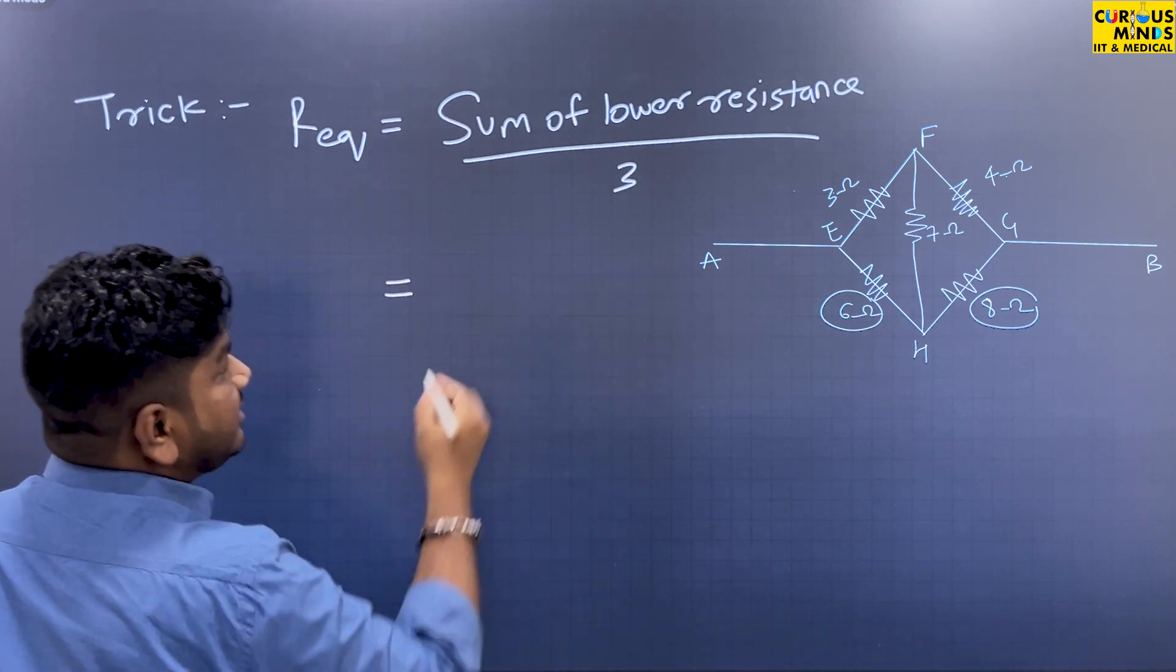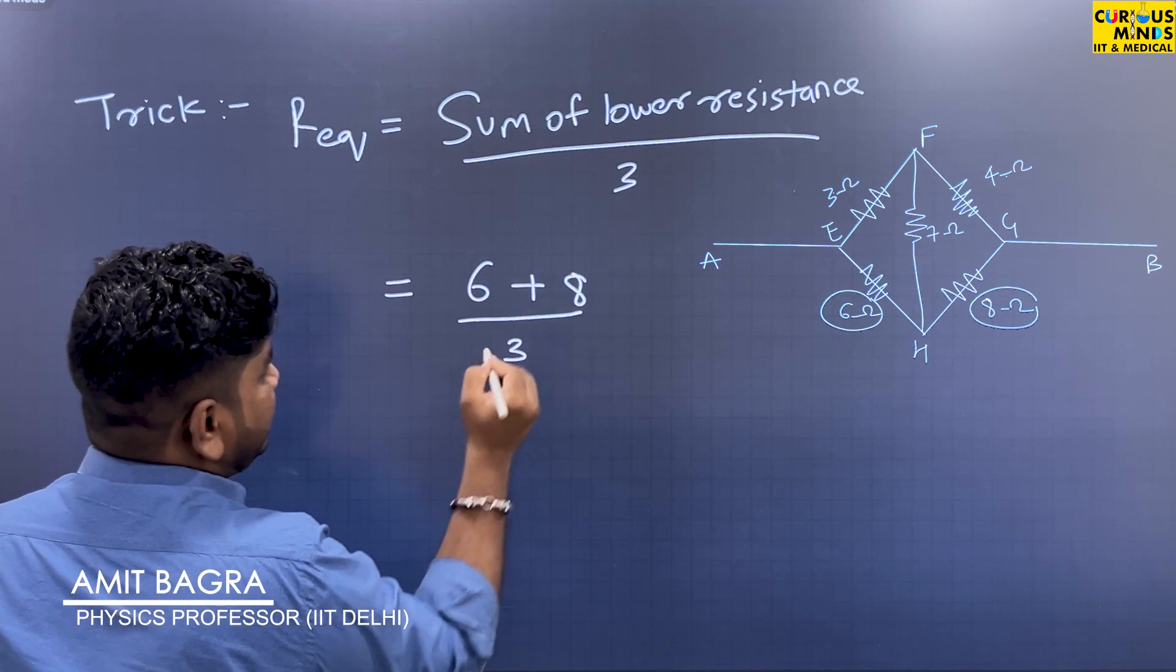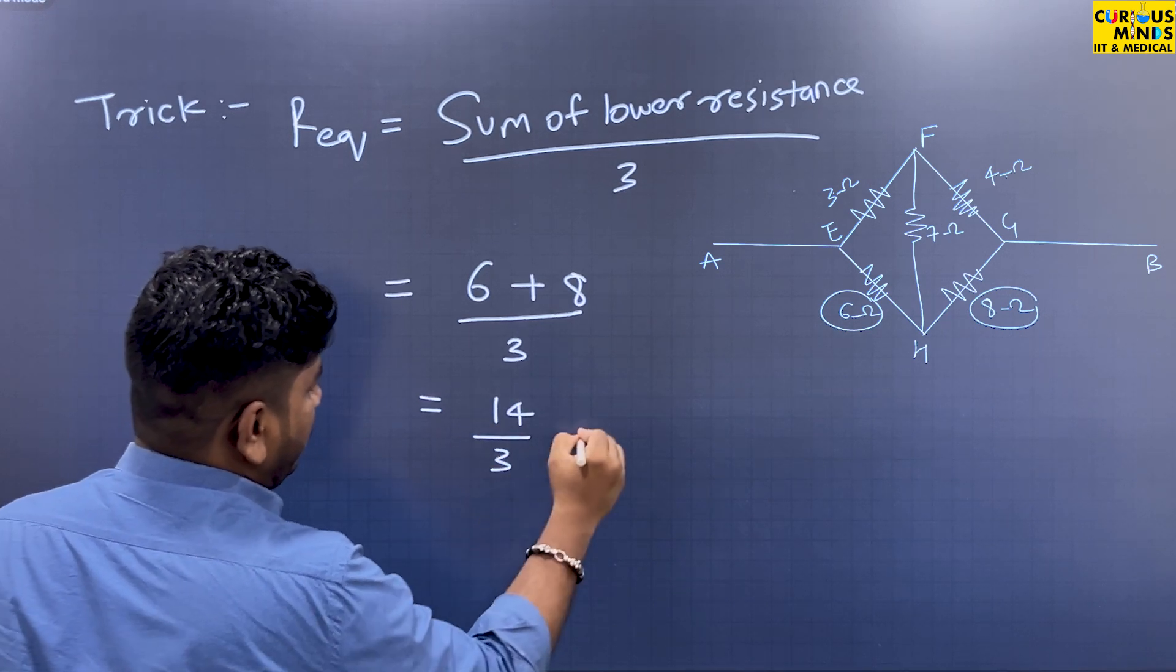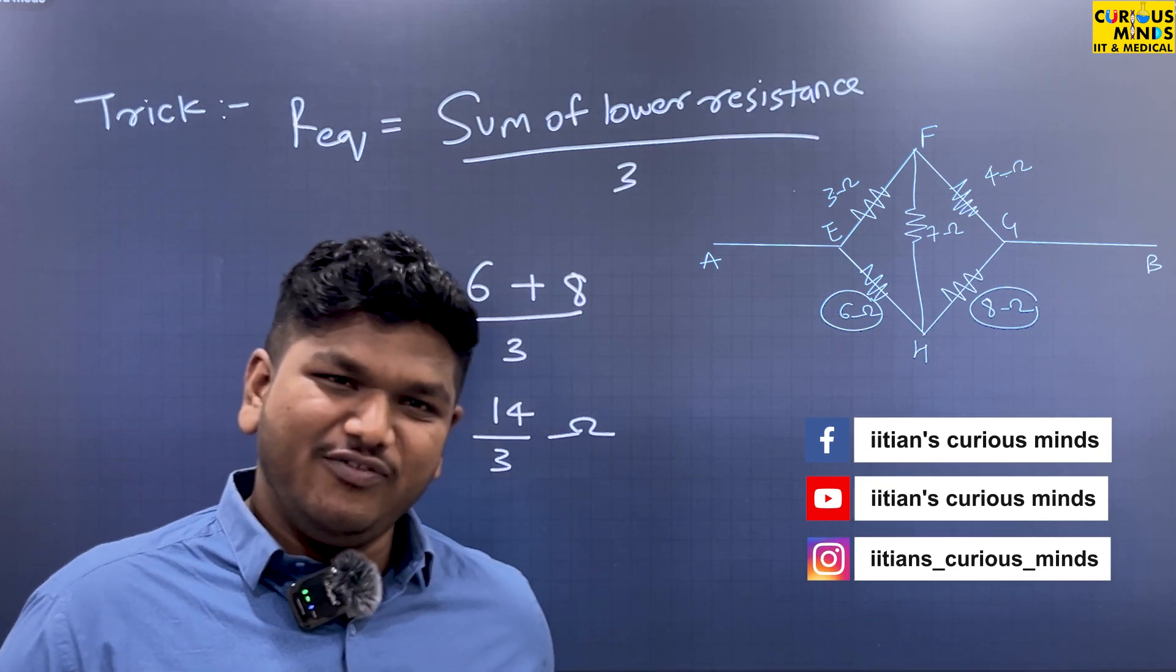As you can see in the diagram, the equivalent resistance is 6 plus 8 divided by 3. This will be 14 by 3 ohms. So students, now you can follow our channel.